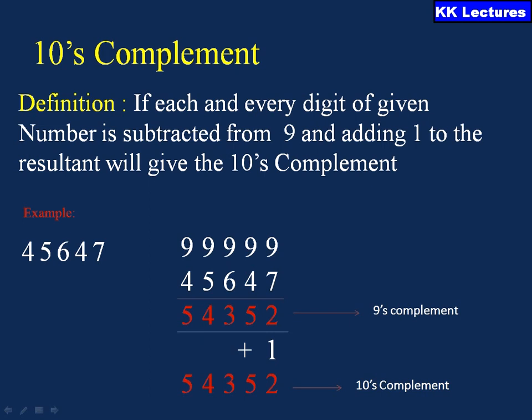Coming to the 10's complement: first find the 9's complement and add 1 to the resultant to get the 10's complement. For example, finding the 9's complement of 45647 gives 54353. Adding 1 to that result gives the 10's complement of the given number.